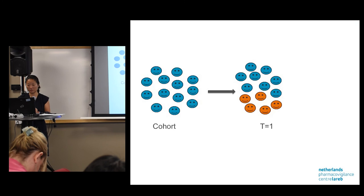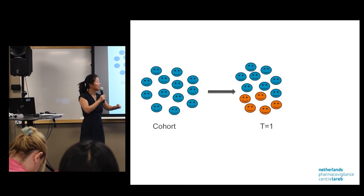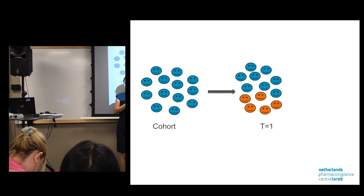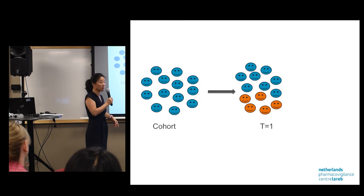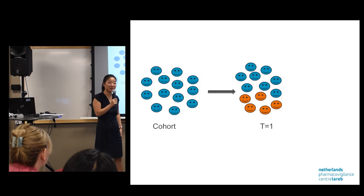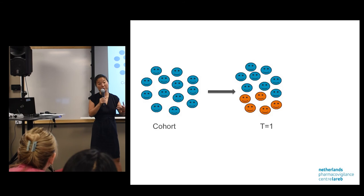The key difference between cohort event monitoring and all spontaneous reporting methods is that you record all events happening — you do not only record events you think are related to the drug, and you do not have to make a causality decision. Patients are recruited, given the drug, and some will develop adverse events at certain points in time. You can choose to measure at one time point or at several — the number of follow-up points depends on the type of drug being monitored.